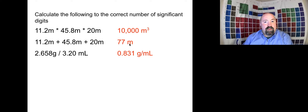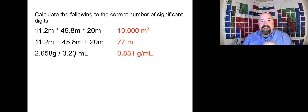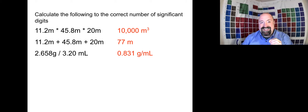Lastly we had a density question: 2.658 grams divided by 3.20 milliliters. Since this is division, we look at the overall number of significant digits. We have four significant digits in our mass measurement and three significant digits in our volume measurement. Remember that the zero in 3.20 counts because it is after the decimal point and after a non-zero digit. So our answer gets rounded to three significant digits: 0.831 grams per milliliter.